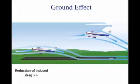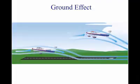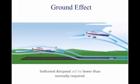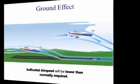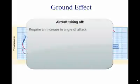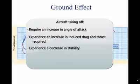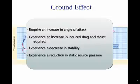The reduction of induced drag due to ground effect means that less power is required to fly at a certain speed. Most of the time, ground effect will produce a higher pressure at the static source and the indicated airspeed will be lower than normally required. When an aircraft is taking off, the reverse happens from landing. The aircraft taking off will require an increase in angle of attack to maintain the same lift, experience an increase in induced drag and thrust required, experience a decrease in stability and a nose-up change in moment, and experience a reduction in static source pressure and increase in indicated airspeed.